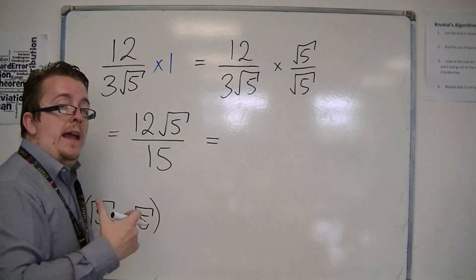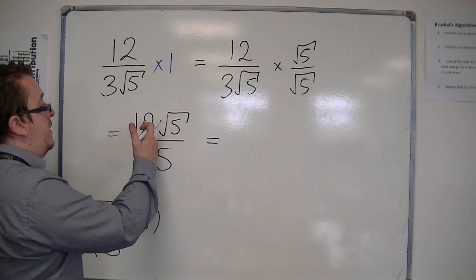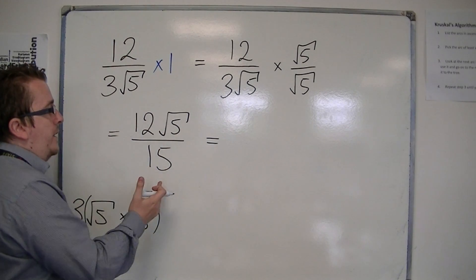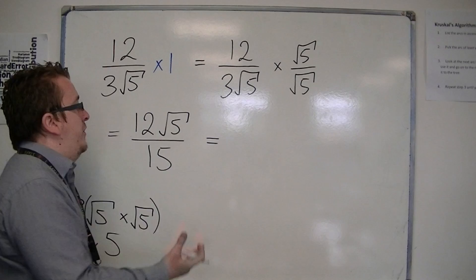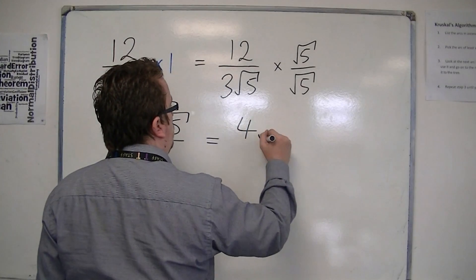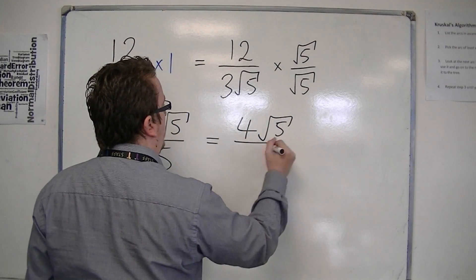Now you can simplify that fraction down. And 12 over 15, both are divisible by 3, so you get 4 root 5 over 5.